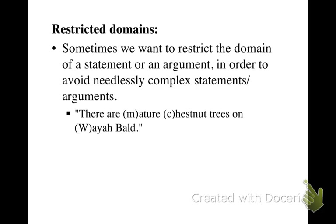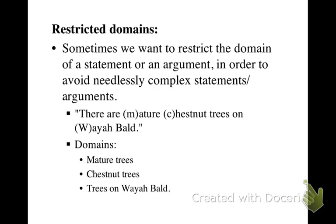Consider the statement: there are mature chestnut trees on Weyabald. Potential domains are mature trees, chestnut trees, or trees on Weyabald. In an existential statement, any predicate can become the domain. So if we have the domain as mature trees, when we translate the statement we don't have to say the part about mature trees, because that's already given as part of the domain.